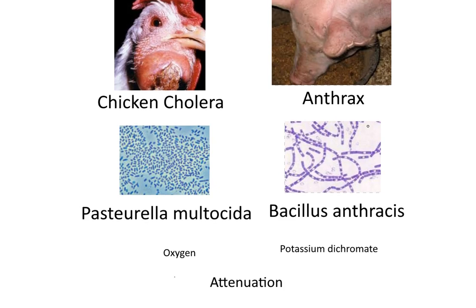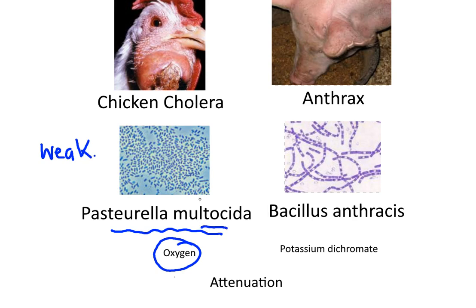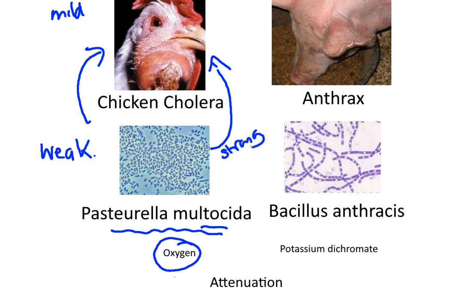What Pasteur did was to take the bacterium and expose it to high levels of oxygen. This created a very weak version of the bacterium, so weak that when it was injected into the chicken, the chicken did not develop the disease, or just developed a mild version of the disease. When the chicken was then injected with the strong version of the bacterium, it did not become ill, because with the mild weakened bacteria, the chicken had developed antibodies which would protect it against the strong version.